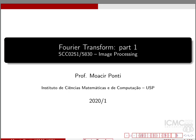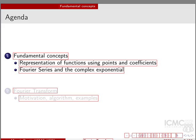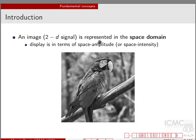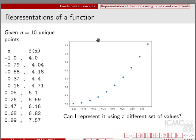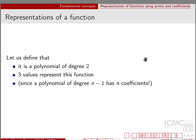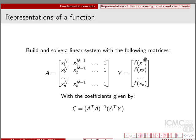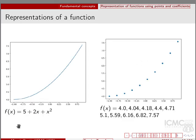In the previous video, we were talking about the Fourier transform. I gave you an introduction of the fundamental concepts related to this technique, and I'm going to recap a few of them. We talked about ways to represent functions. I showed you this example in which I had a function represented by a series of points sampled in time, and an alternative representation in which we define that this function is actually a polynomial. I was able to represent the same function by using three coefficients, which are related to the polynomial that shapes this function.